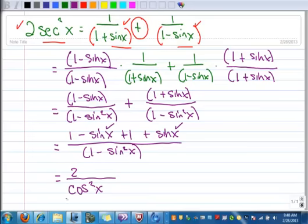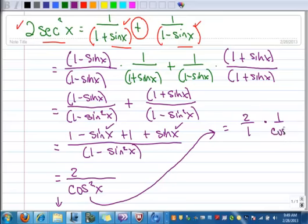For the last step, I'm running out of room here, so I'm going to move it over here and pretend that I'm continuing down this way. So I can think of this as 2 over 1 times 1 over cosine squared x. And so I can keep the 2, but then 1 over cosine squared becomes secant squared.